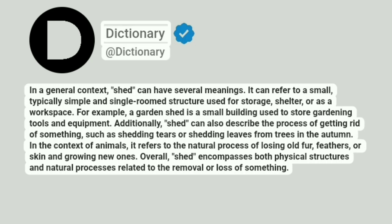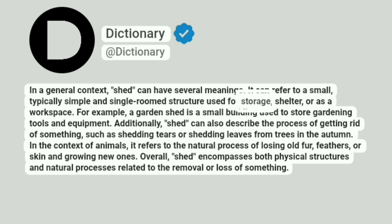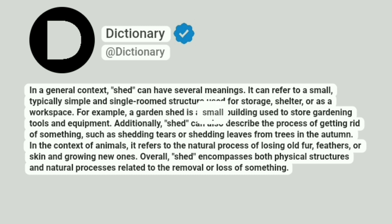Dictionary. Addictionary. In a general context, shed can have several meanings. It can refer to a small, typically simple and single-roomed structure used for storage, shelter, or as a workspace. For example, a garden shed is a small building used to store gardening tools and equipment.